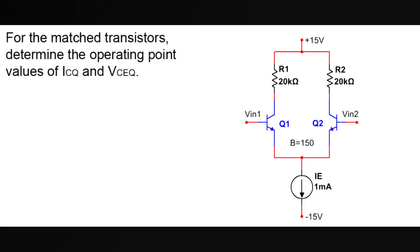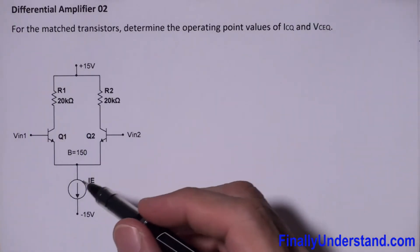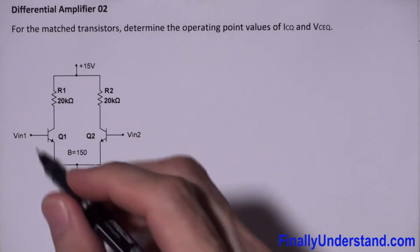Let's take a look at this example. We're supposed to find ICQ and VCEQ. Please notice that the tail current is already given, it has a value of 1 milliamp, so I can find the current very easily.